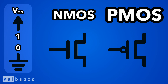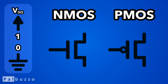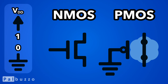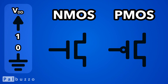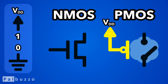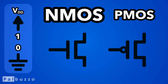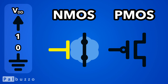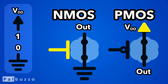And with PMOS transistors, the opposite will be true. When the PMOS's gate is connected to ground, it will cause the source and drain to be connected. And when the PMOS's gate is connected to VDD, the source and drain will be disconnected. NMOS transistors are better at connecting outputs to ground, so we'll use them to output 0s. And PMOS transistors are better at connecting outputs to VDD, so we'll use them to output 1s.